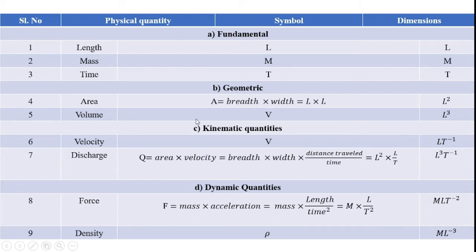Force can be expressed as mass into acceleration. Mass is the fundamental quantity denoted by capital M, and acceleration can be expressed as length divided by time squared. So the dimension of force is M into L divided by T squared, which can be written as M L T power minus 2.